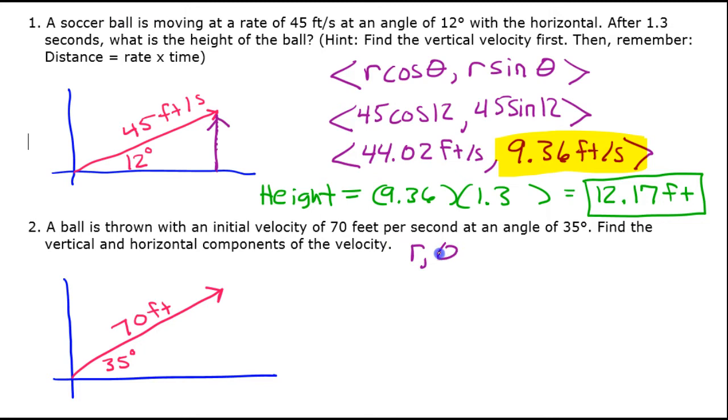So when we talk about the magnitude and the direction, r, theta, that's the 70 feet is the magnitude and 35 degrees is the direction. This is the r and this is the theta. So I can separate this vector into its horizontal and vertical components using the formula r cosine theta comma r sine theta.